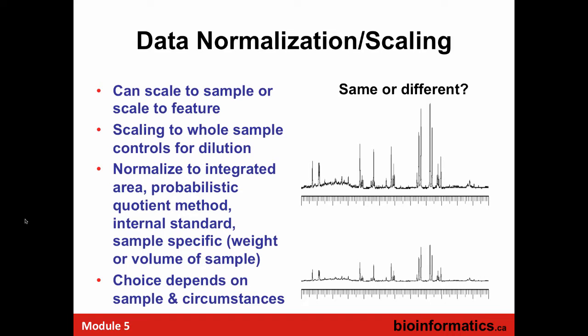Jeff talked a little about this. It's how to address this problem where you're seeing two different spectra — this happens to be NMR, but it could also be mass spec or HPLC chromatogram. The peaks are in the same position but one is higher and one is lower. There are different ways to scale things to make sure you're comparing apples to apples and not apples to oranges, or that you're measuring with a meter stick and not a yard stick.